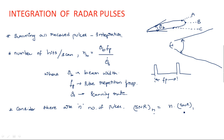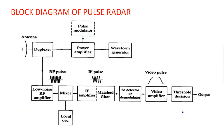When n number of pulses are received, integration should be performed. The main question is where to perform this integration in the receiver. Considering the block diagram of the pulse radar receiver, after passing through the IF amplifier and other stages, we can perform integration either before the second detector or after the second detector.